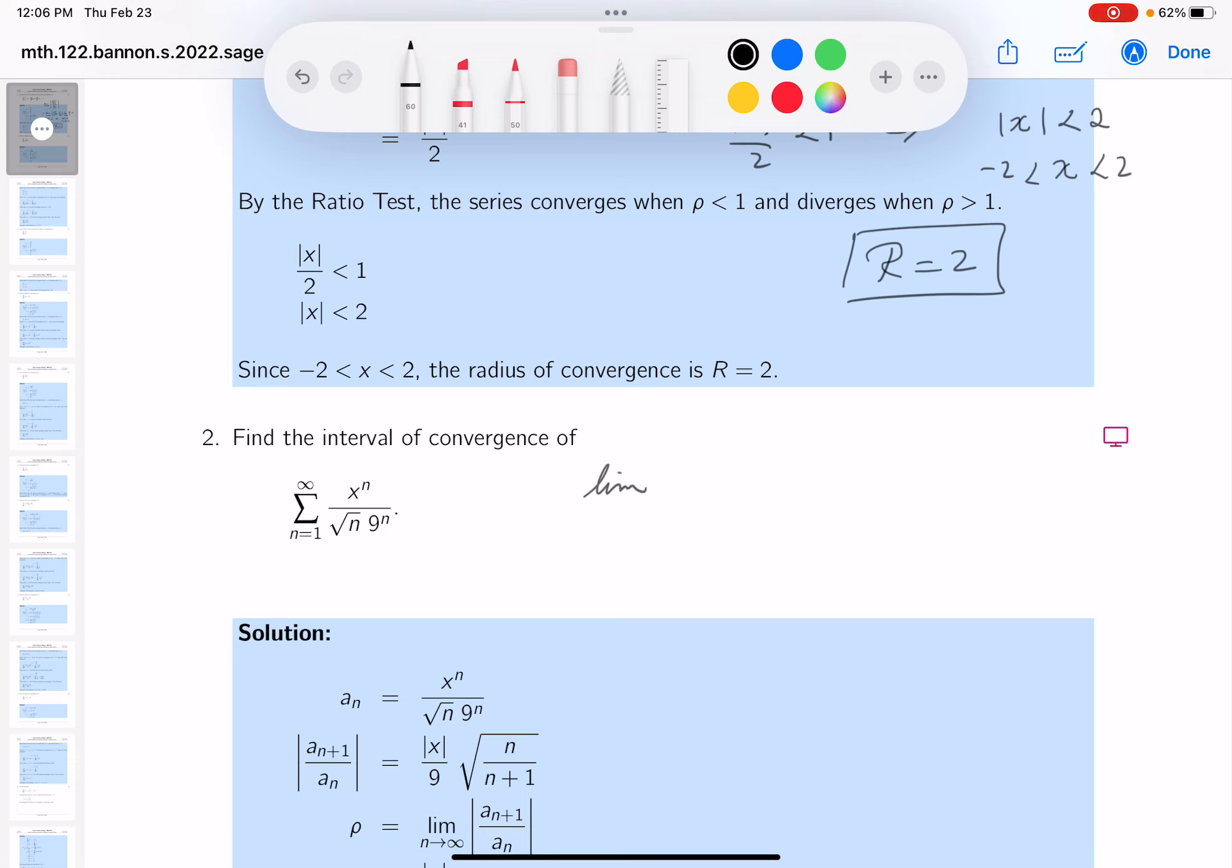Limit, and this is the second problem that we're doing, n goes towards infinity. Absolute value, x to the n plus 1 over, well let's see, the root of n plus 1 times 9 to the n plus 1.